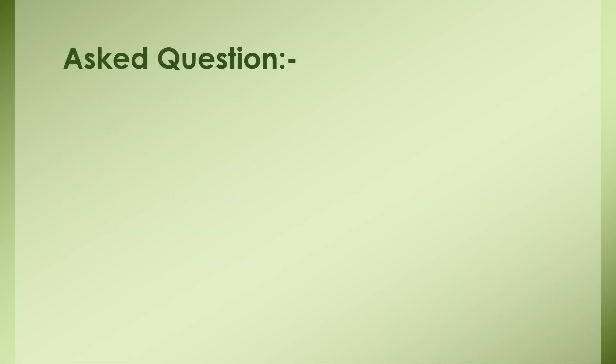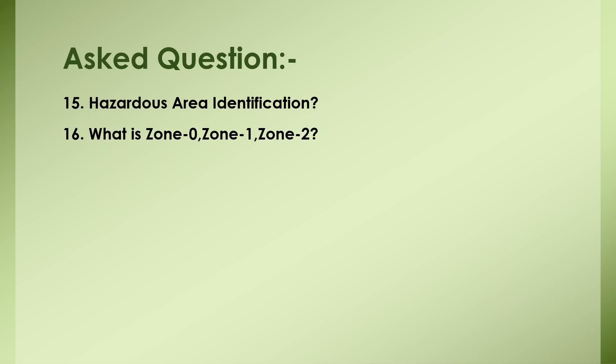Since every petrochemical refinery is in a hazardous area, questions were asked about hazardous area identification: how do you define Zone 0, Zone 1, and Zone 2? Zone 0 is where explosive gas atmosphere is continuously present for more than 1,000 hours — electrical installation is not possible there; if equipment must be installed it should be intrinsically safe.